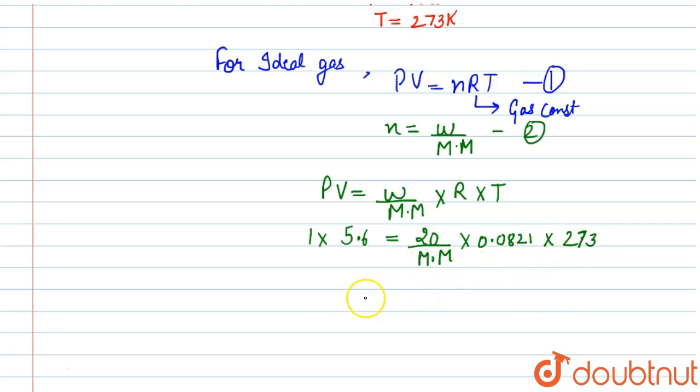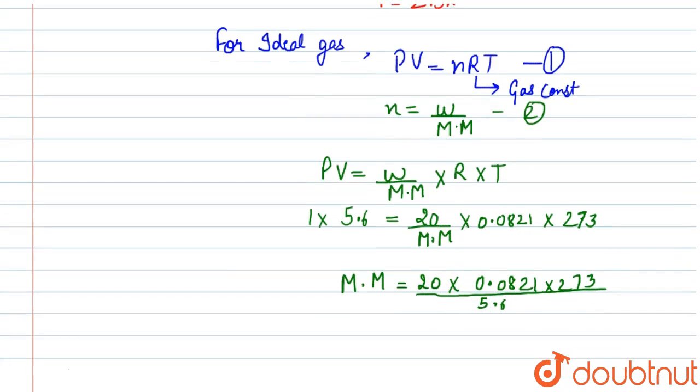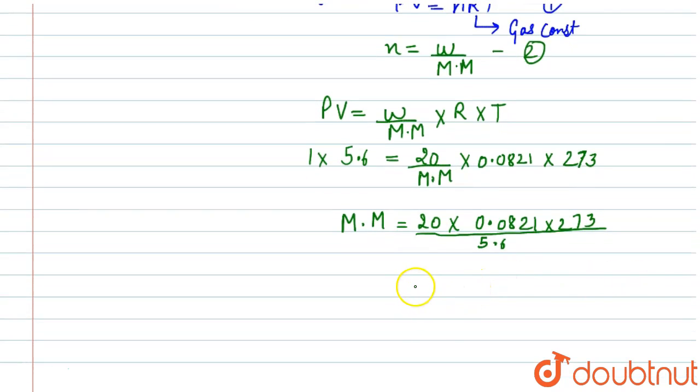Now we will solve it. Molar mass will be 20 times 0.0821 times 273 divided by 5.6. After solving we will get molar mass as 80 grams.